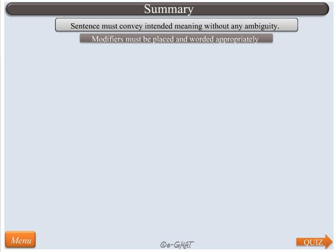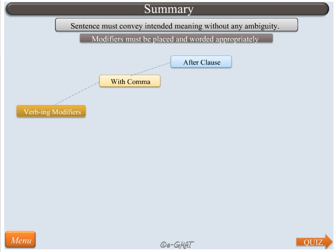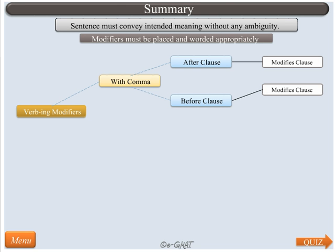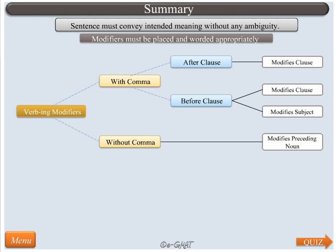From our knowledge of modifiers, we know that they must be placed and worded appropriately for the sentence to make complete sense. There are certain grammatical nuances that we need to identify modifier errors in more complex sentences. When verb ING modifiers appear with a comma after the clause, they modify the complete clause. When they appear with a comma before the clause, they can modify either the complete clause or just the subject of the clause, depending on context. When verb ING modifiers are not separated from the clause by a comma, they always modify the preceding noun. So whenever you spot a verb ING modifier, always pay close attention to the comma to determine what the modifier is grammatically modifying, then determine if this modification makes sense.